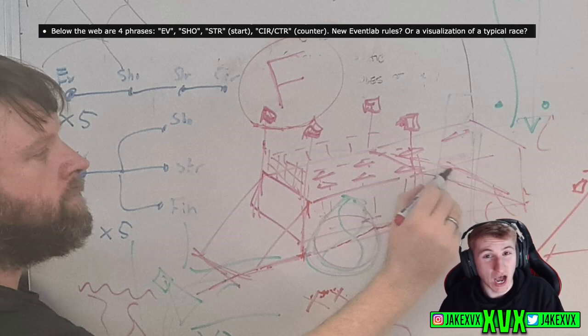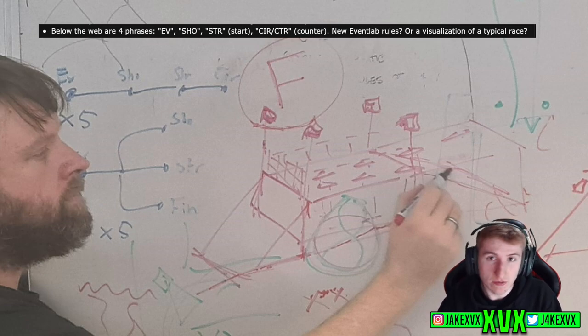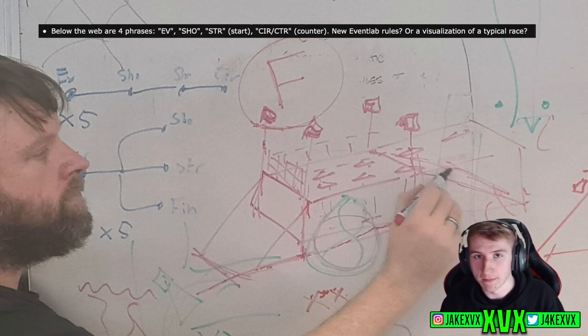He actually had the idea that this is hinting towards new Event Lab rules. SHO then there's STR which could mean start and then CIR or CTR which could mean counter. You know he's just trying to figure it out what these letters could mean and what they mean along this bar. New Event Lab rules possibly.